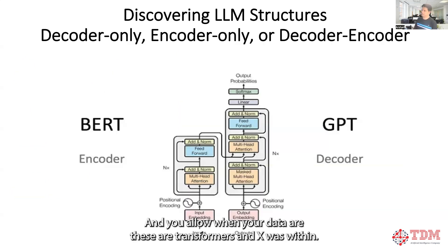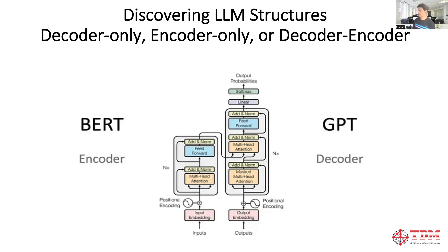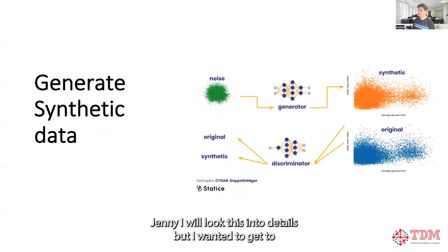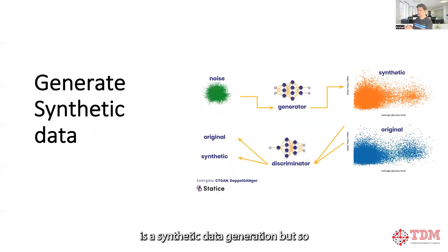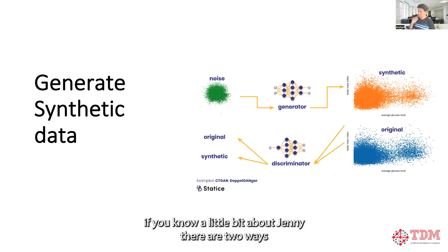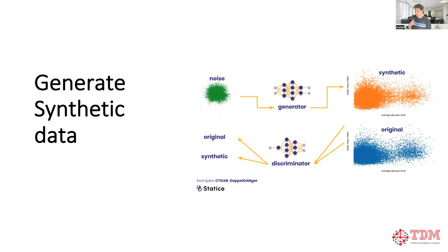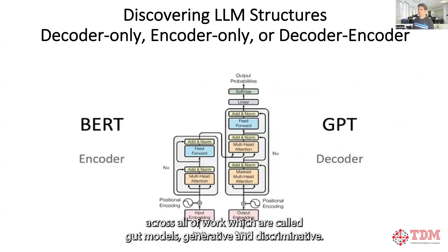These are transformers and in the next Gen AI session I will look at this in detail. But I wanted to get to the synthetic data generation part. If you know a little bit about Gen AI, there are two ways transformers work — called GAN models — generative and discriminative.